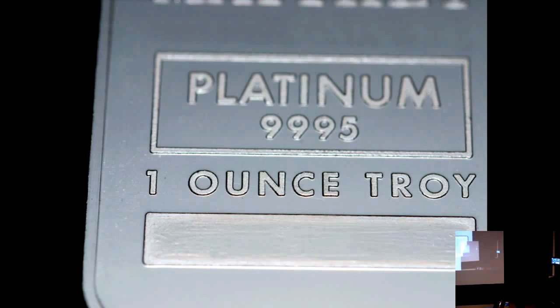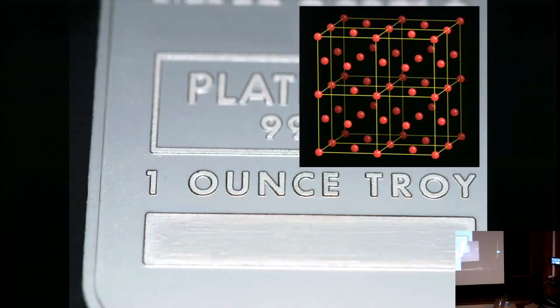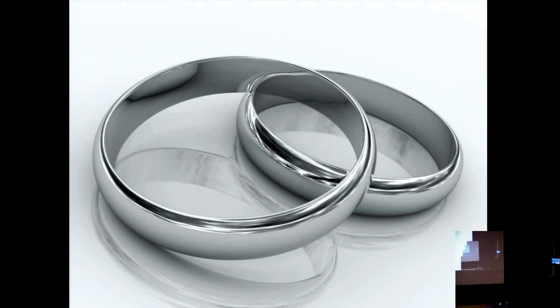Here's platinum — three-nines pure, one troy ounce. Inside a piece of platinum, the atoms sit in a face-centered cubic or FCC structure: atoms at the corners of cubes and on the faces. I care about platinum partly because of a funded NSF project working with South Africa on jewelry alloys. South Africa exports 75% of the world's platinum as a raw material, and they'd love to export it as a value-added alloy instead.